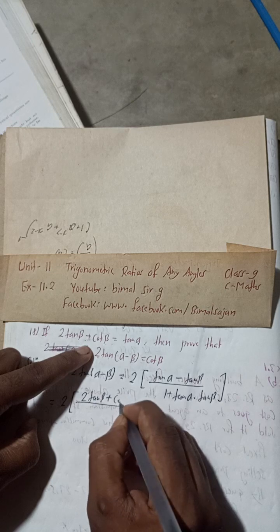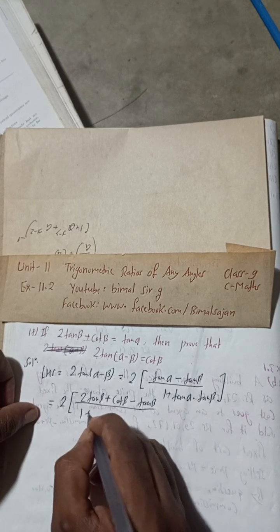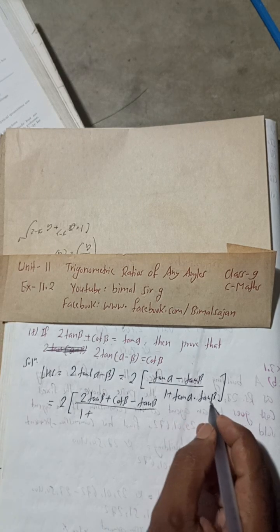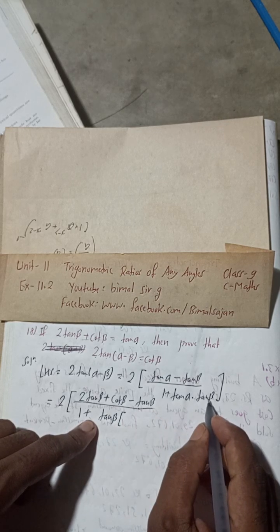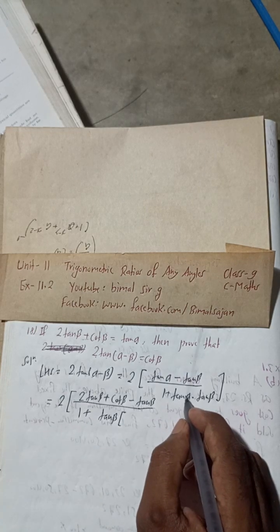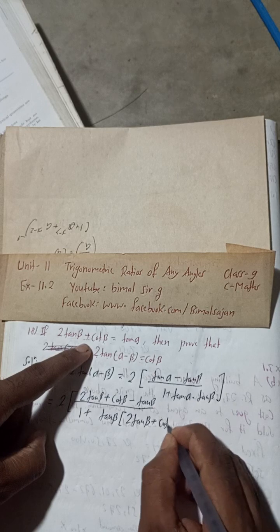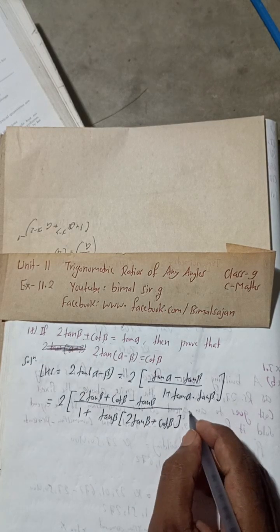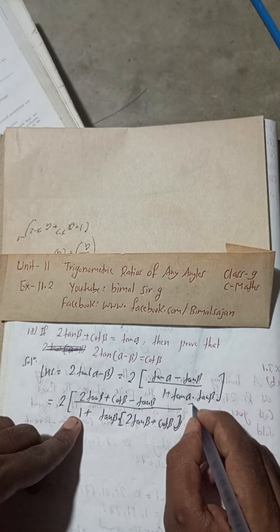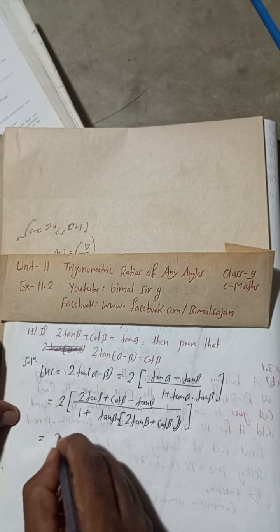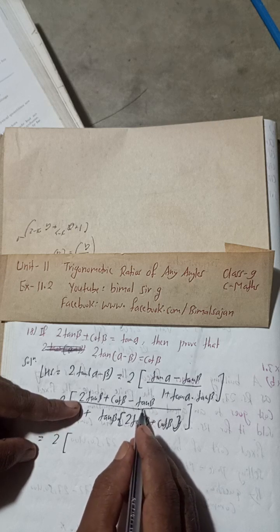So we write: 2 times [(2·tan β + cot β) − tan β] divided by [1 + tan β·(2·tan β + cot β)]. In the numerator, 2·tan β minus 1·tan β gives us tan β. So the numerator simplifies to tan β.